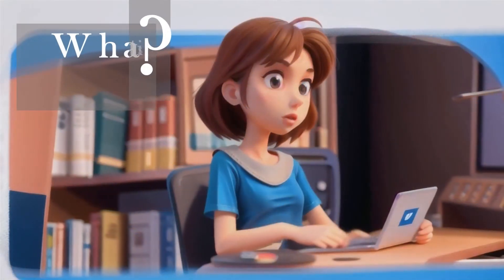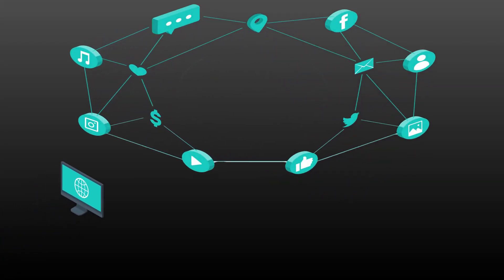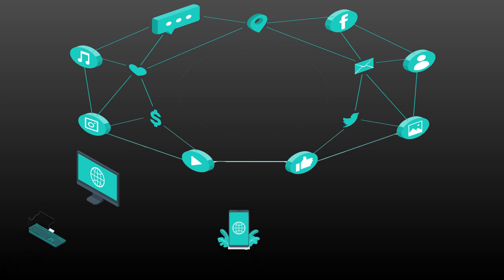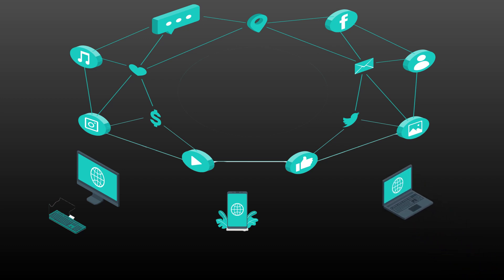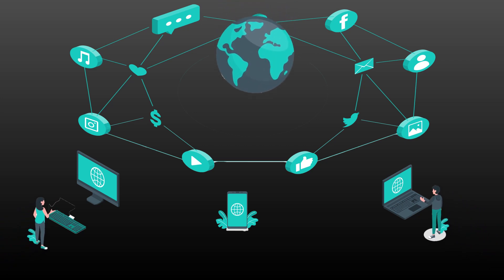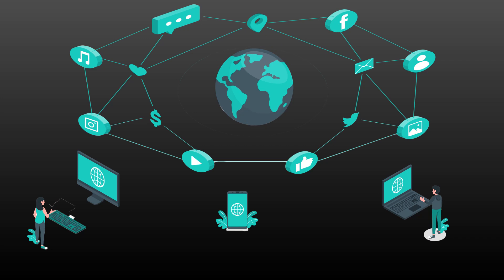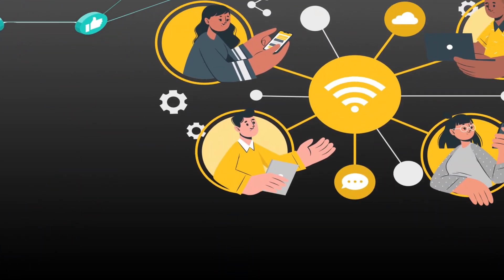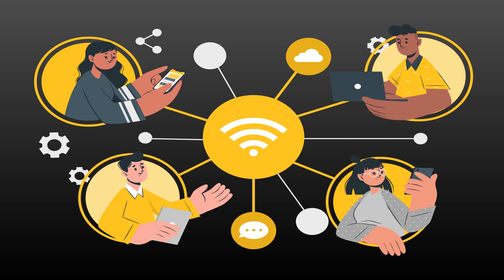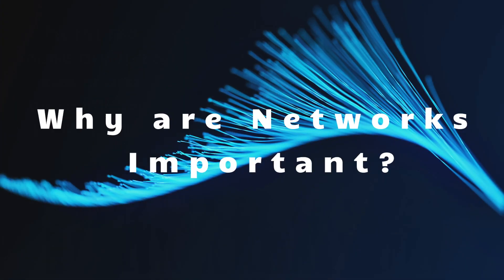What is a network? A network is essentially a system that allows devices to connect and interact with each other. It's like a digital highway where information can flow freely between different devices. The size and complexity of networks can vary greatly, but the basic idea remains the same: to enable communication and resource sharing.